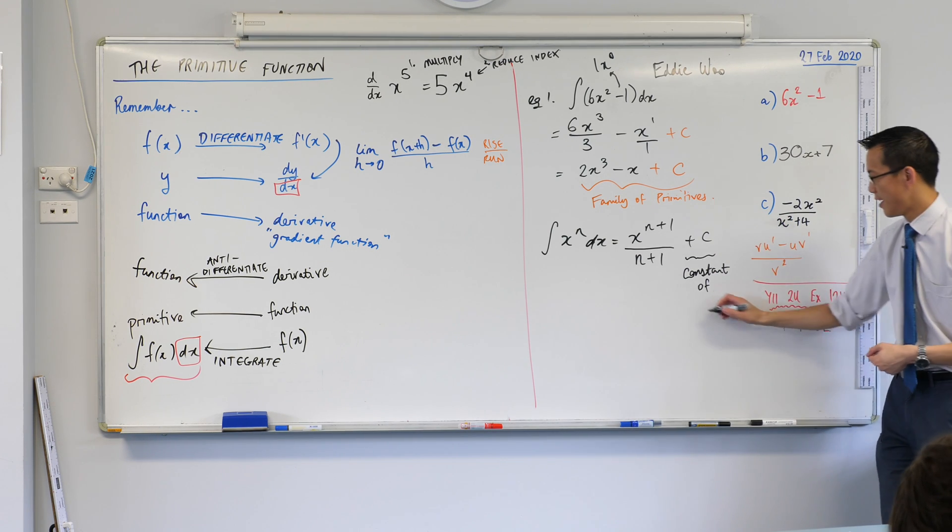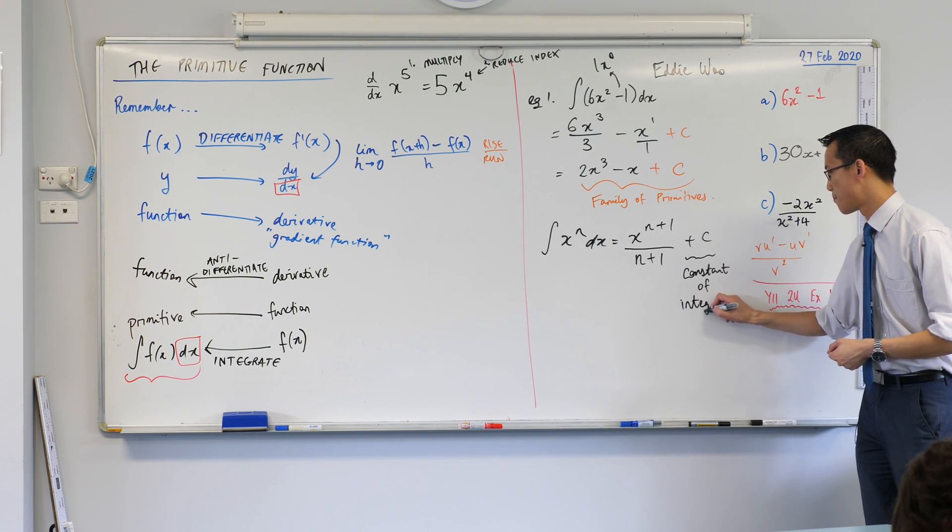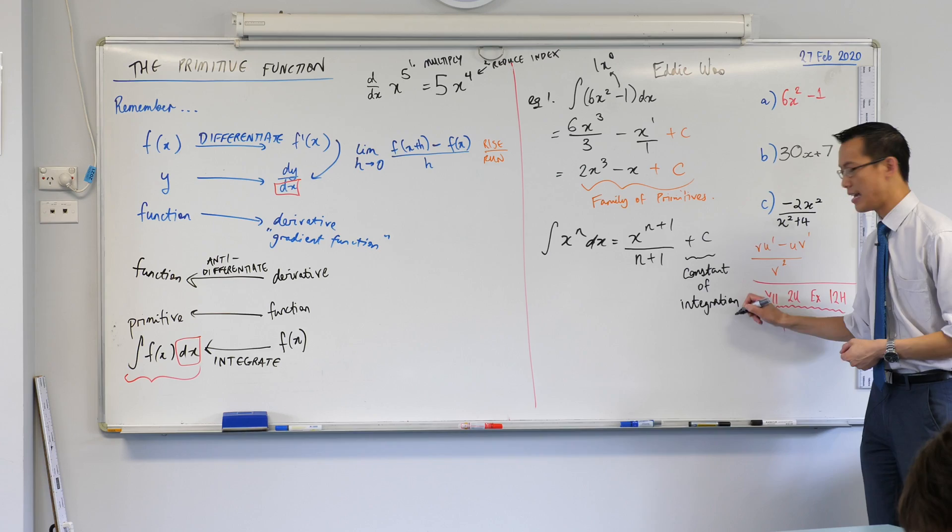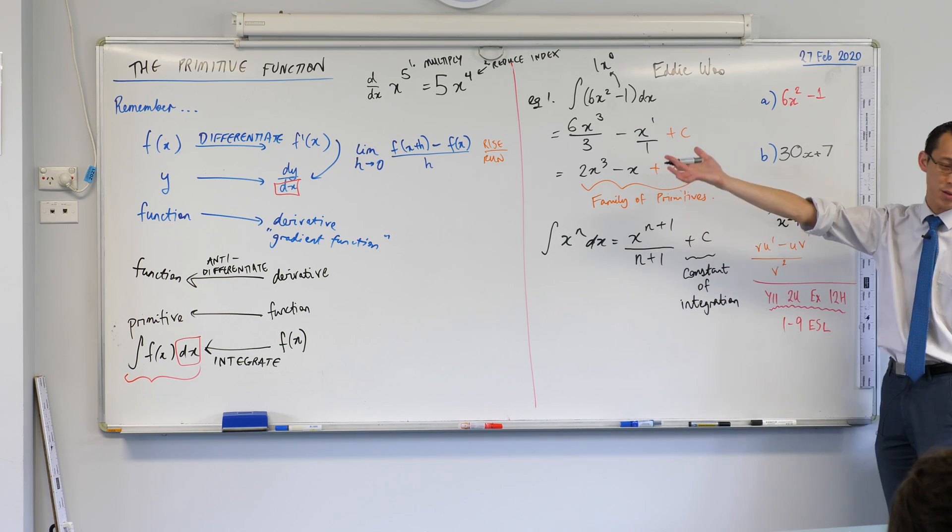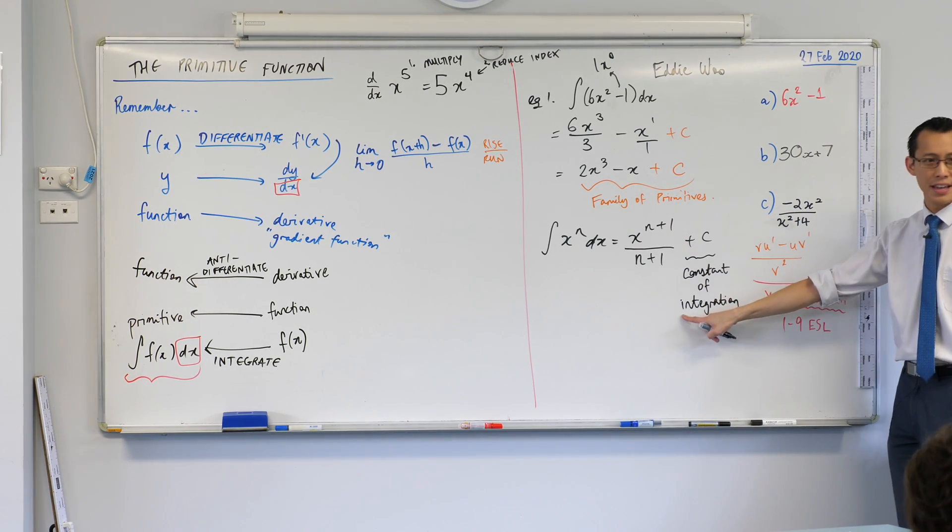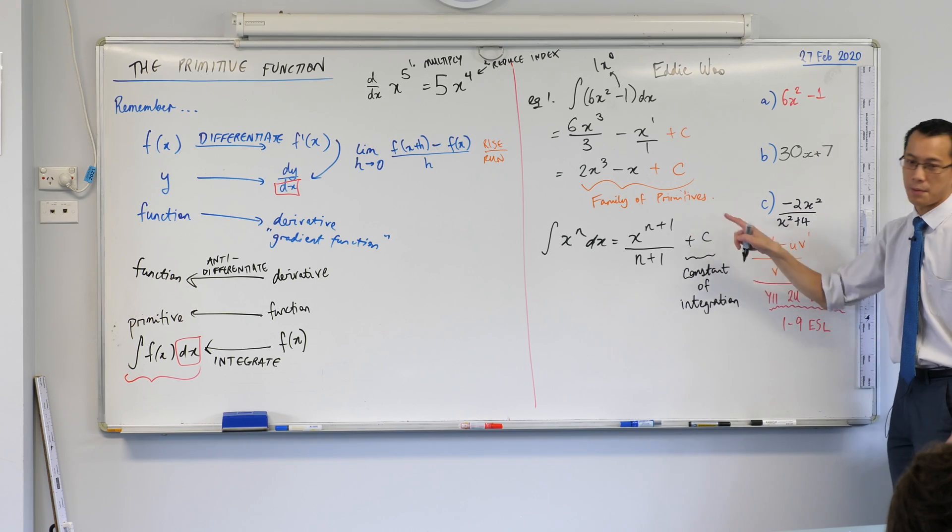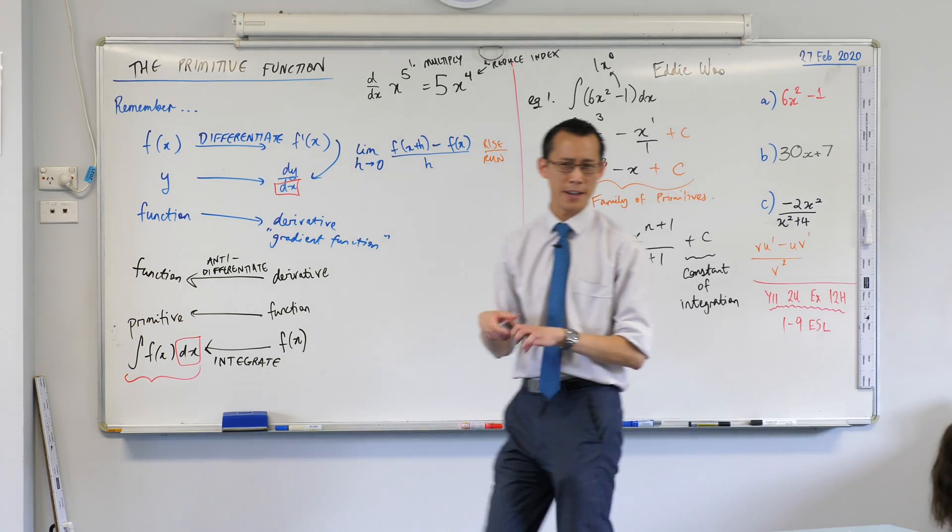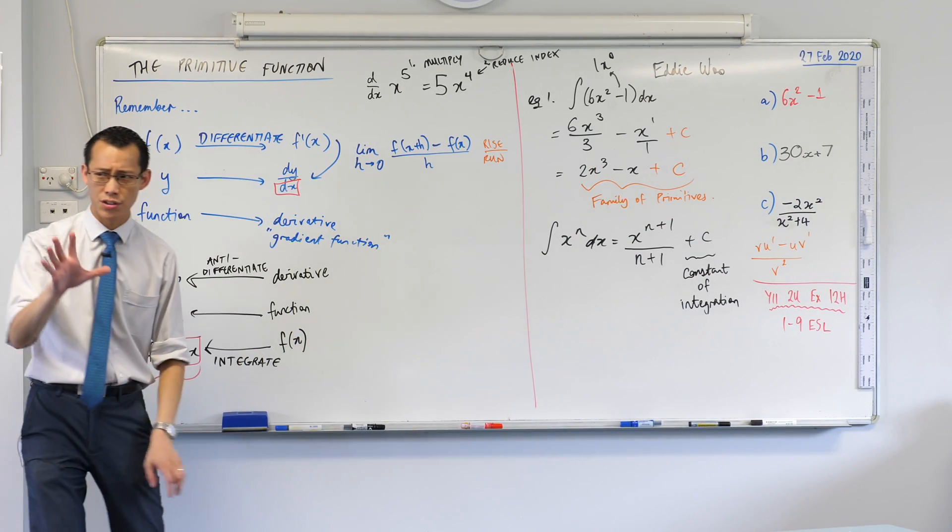We're going to save that for a future lesson. But the reason I'm telling you now is because this plus c, its name, is the constant of integration. It's what you get when you go through this process of anti-differentiation, this process of integration. It appears here to cover the whole family. Any questions?